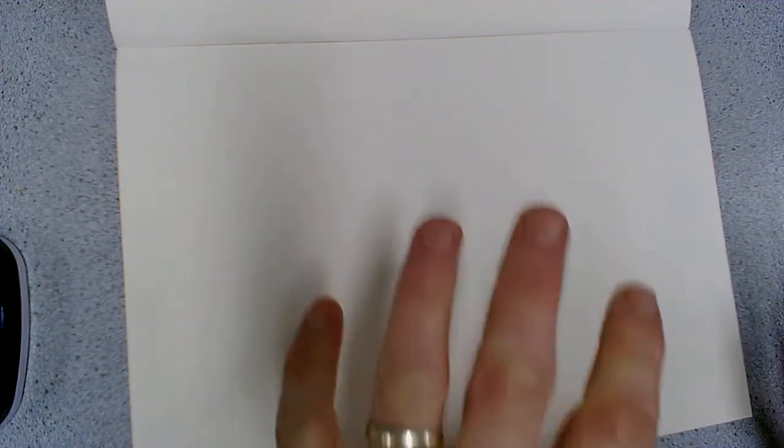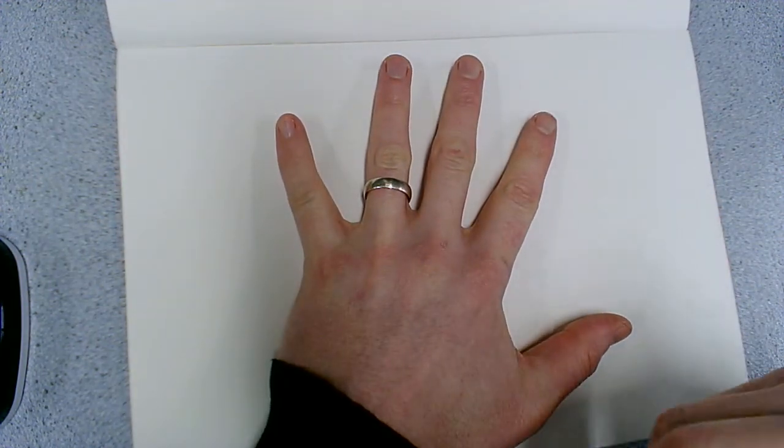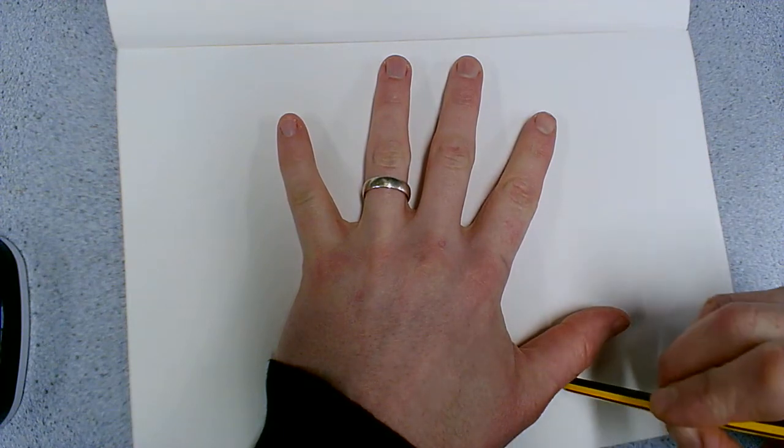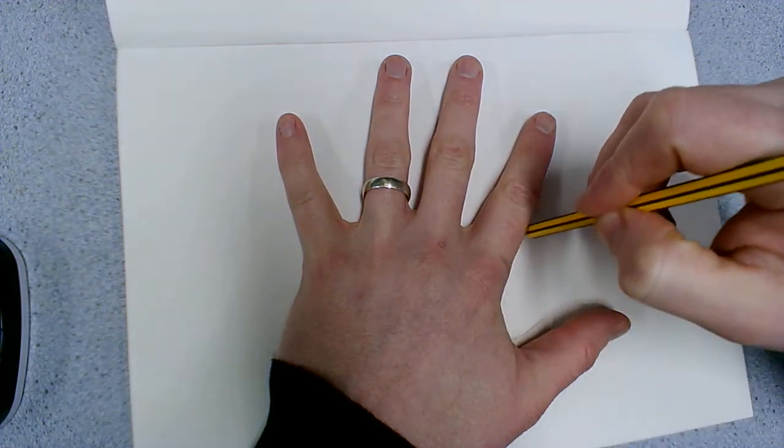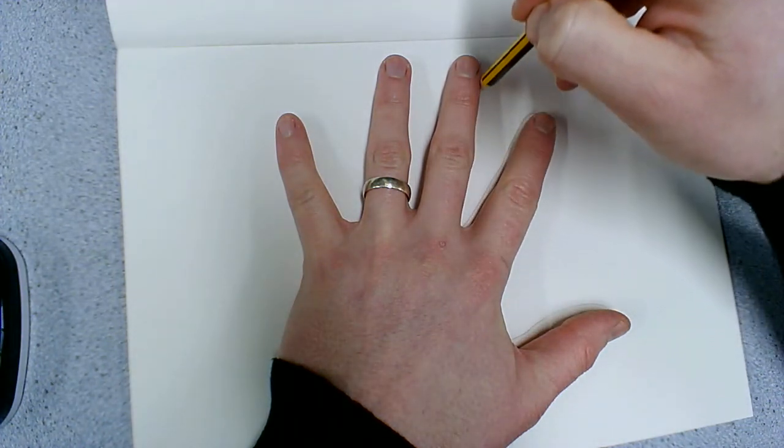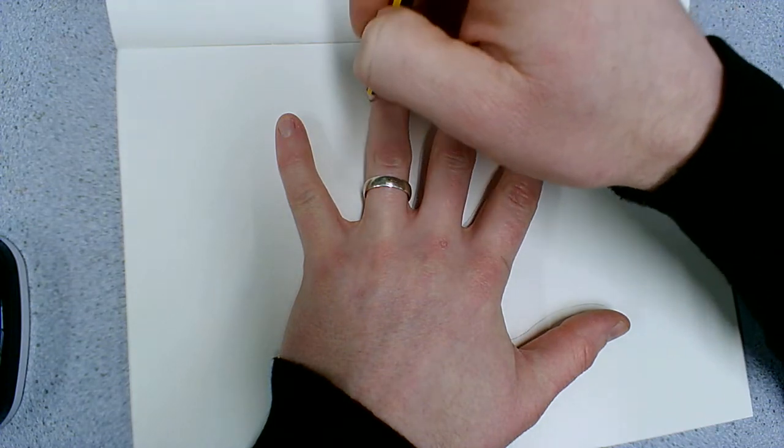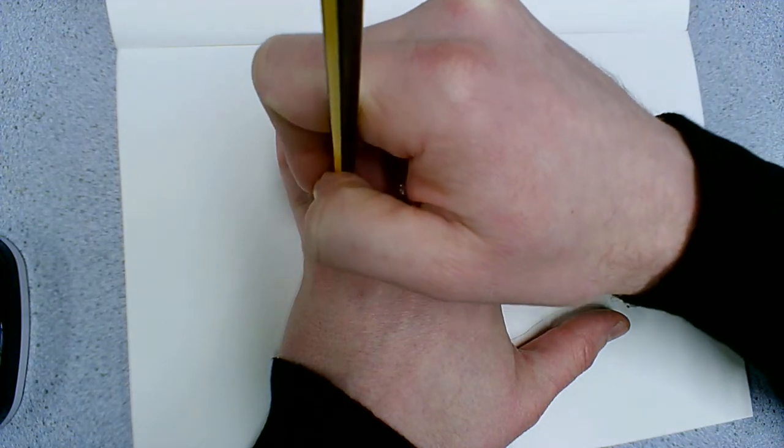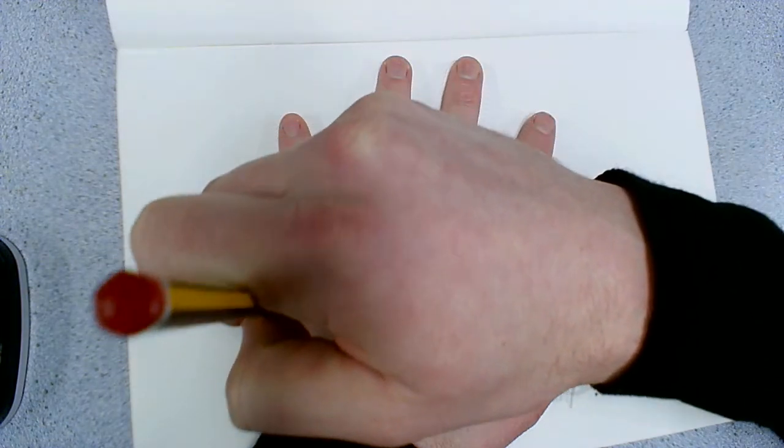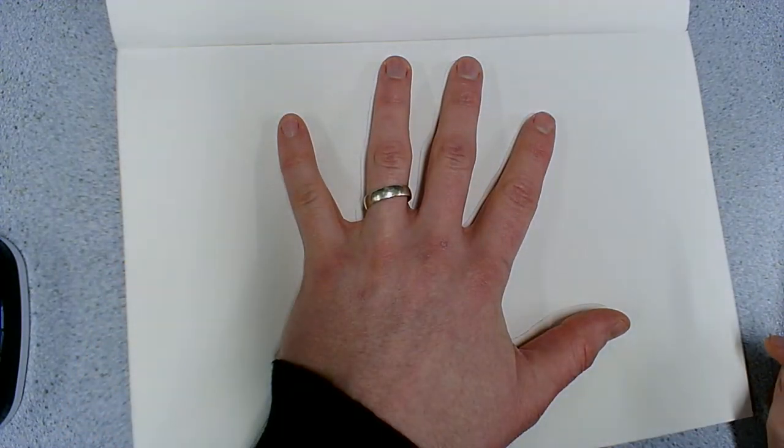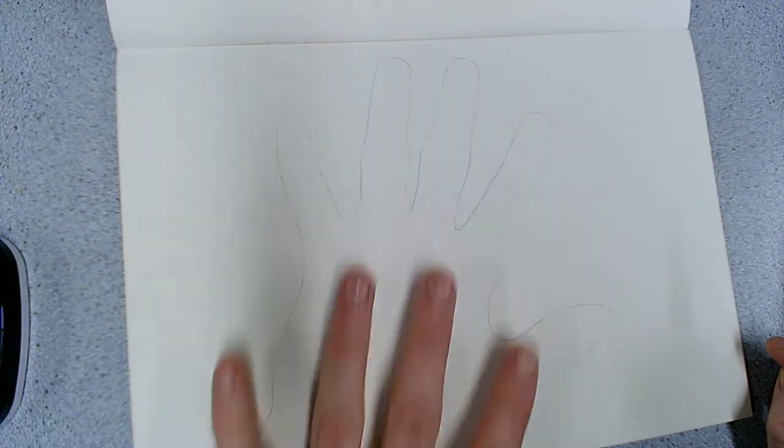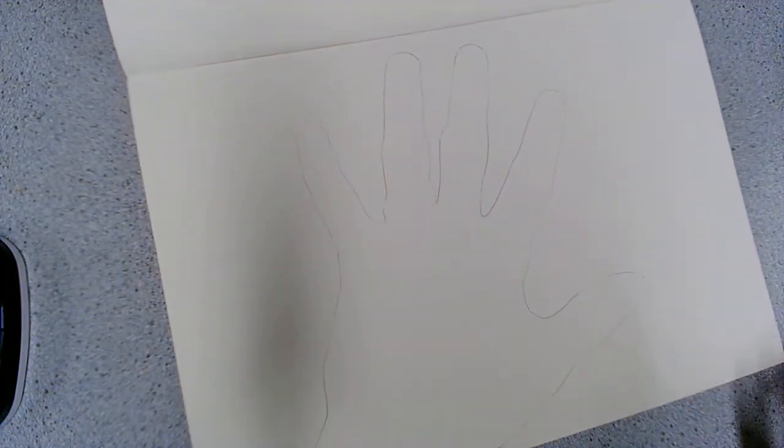Good morning everybody, today we're going to do texture hands. What we're going to do is start off with the most simple thing in the world - we're just going to put our hand down and draw around it. Try and make your pencil nice and straight so you don't end up with big fat fingers or little skinny fingers. When you take your hand off it looks about the same.